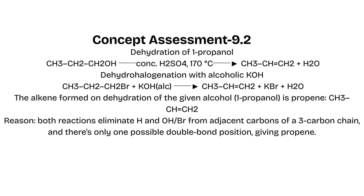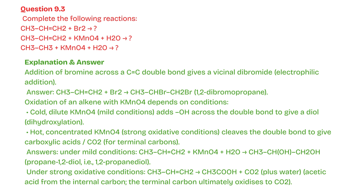Question 9.3: Complete the following reactions. Explanation and answer: Addition of bromine across a C=C double bond gives a vicinal dibromide — electrophilic addition.